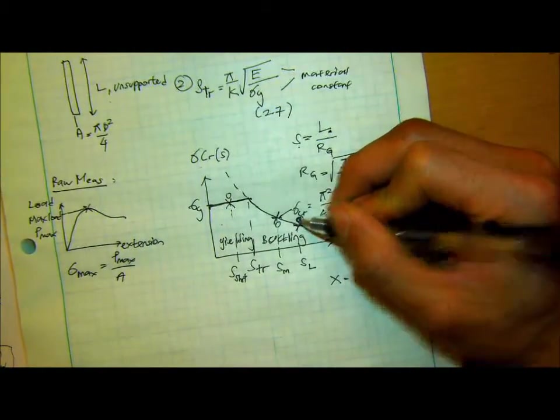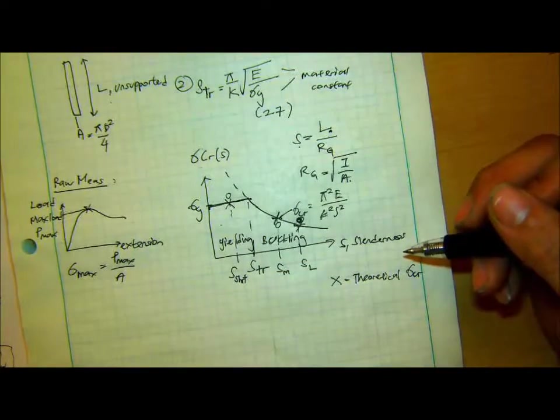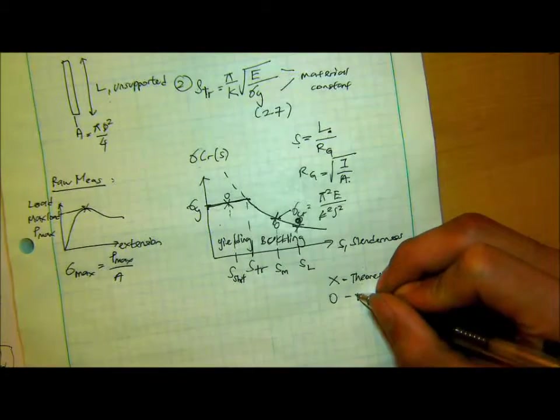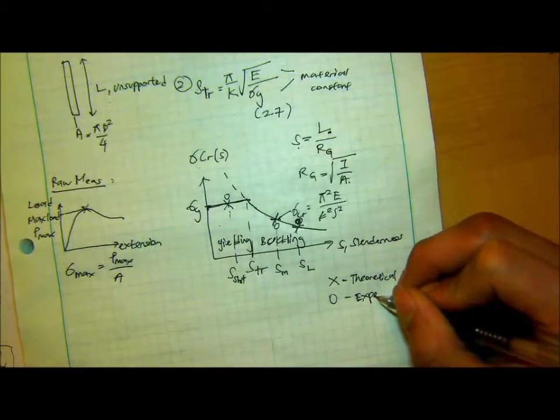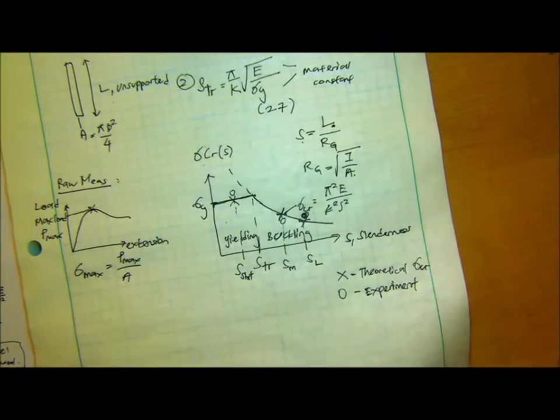And then let's say I do it for every case. For long case, the medium case, and the short case. And I'm going to plot it, superimpose it on the same theoretical plot. And let's say it's somewhere there, there, and there. But they're the same X value. So this is experiment.